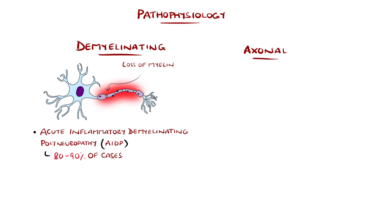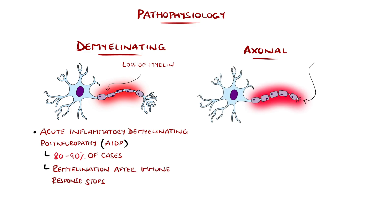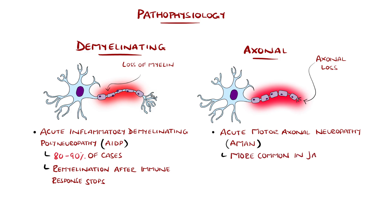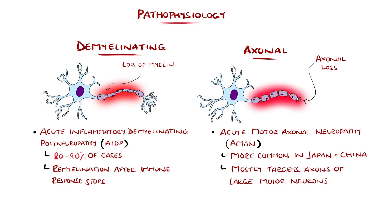In AIDP there is segmental loss of myelin. Often, when the immune response is stopped, remyelination occurs and symptoms can resolve. Acute motor axonal neuropathy, or AMAN, which is more common in Japan and China, is an example where the axon is targeted in mostly larger motor neurons, with minimal loss of myelin.